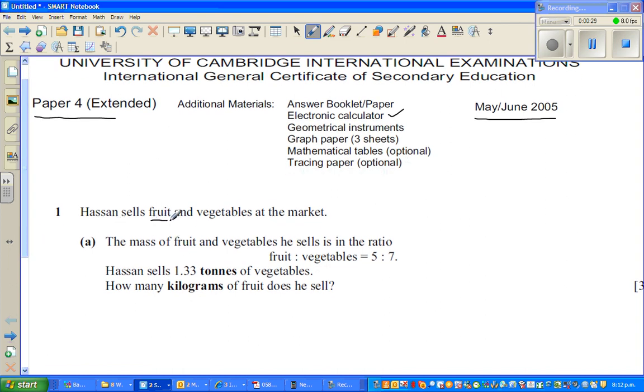Hassan sells fruits and vegetables. The mass of fruit and vegetables he sells is in the ratio fruit to vegetables of 5 to 7. This means fruit to vegetables is 5x to 7x. So he is selling 5 times x of fruit and 7 times x of vegetables. We need to find x first.